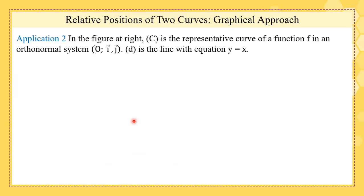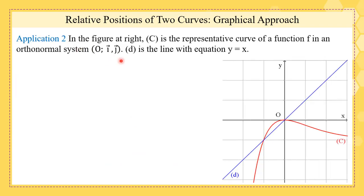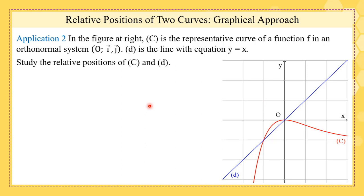Now let's see another application. We have two curves: the curve C and the line D. The question is to study the relative positions of C and D. We can see that the curve and the line intersect when X is negative 1, and they also intersect when X is 0.